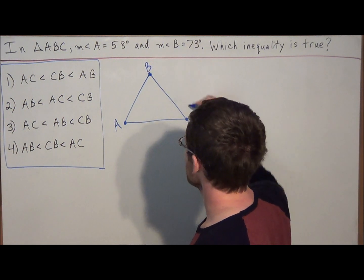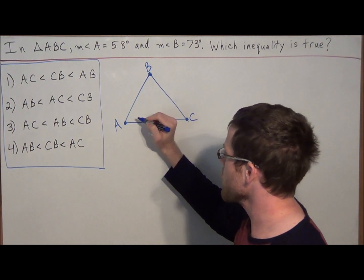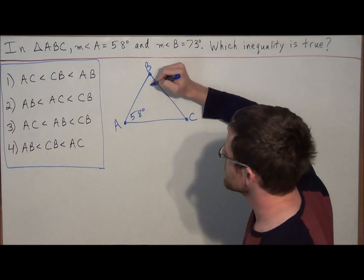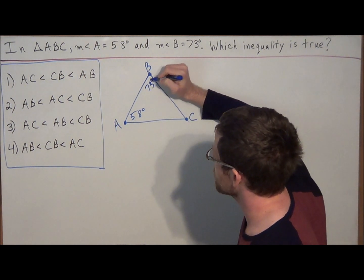So we'll call this triangle ABC and we know that angle A equals 58 degrees and we know that the measure of angle B is equal to 73 degrees.